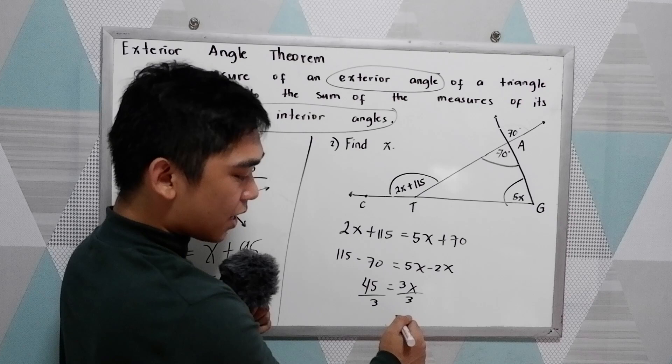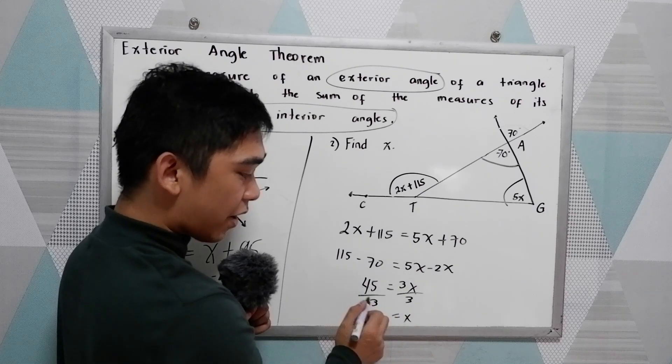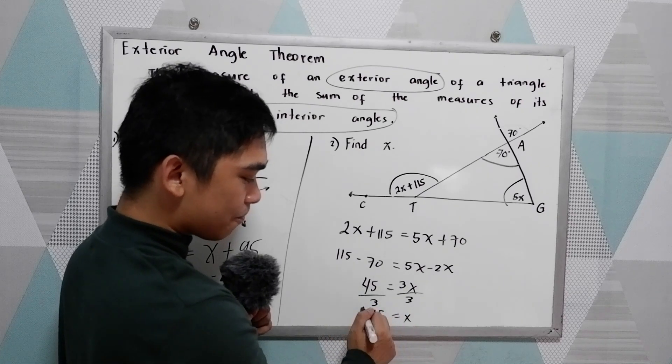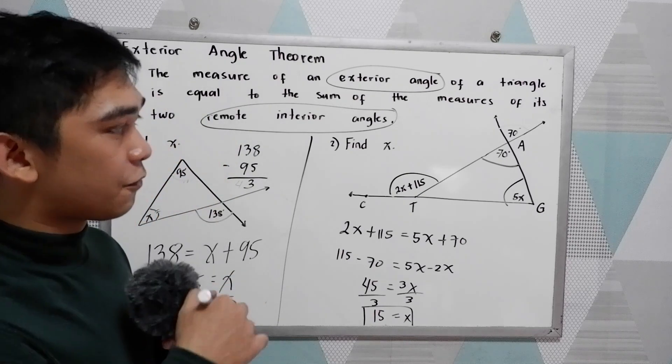Divide by 3 to get the value of X. 45 divided by 3, that is 15. So X is equal to 15.